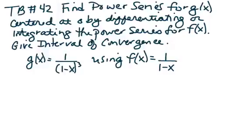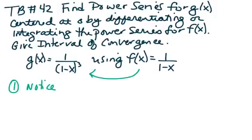We are asked to find the power series representation for g of x centered at zero by differentiating or integrating the power series for f of x. The first thing you need to notice is that g of x is a multiple of the derivative of f of x, so you want to examine f of x and see if you can get to g of x by taking the derivative or by integrating. You have to go from f of x to g of x either by differentiating or integrating.